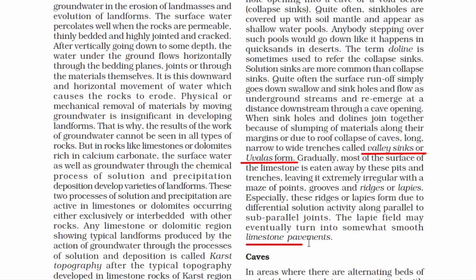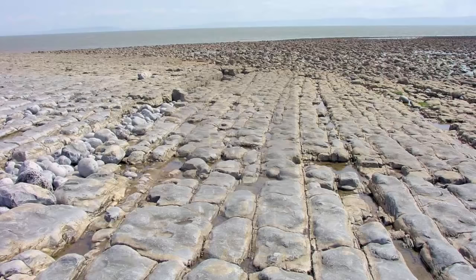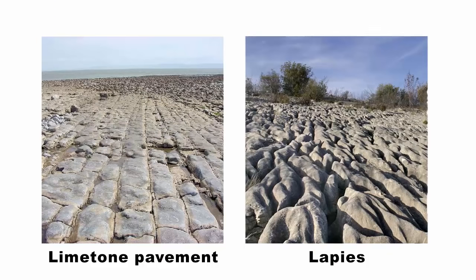The next term is limestone pavements. This kind of landform is also called a karst landform. They are flat, cut into pieces, exposed limestone rocks. In lapies, the landform is similar, but it is carved and cut with pits and cavities in between the rocks. Over a long period of time, the lapies field eventually turns into somewhat smooth flat limestone pavements.